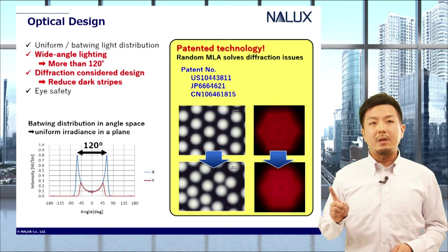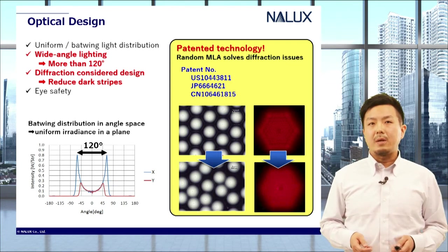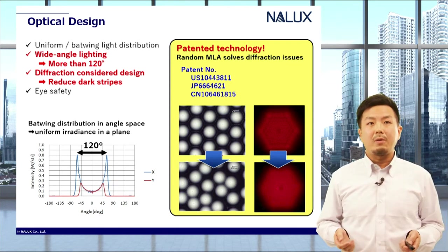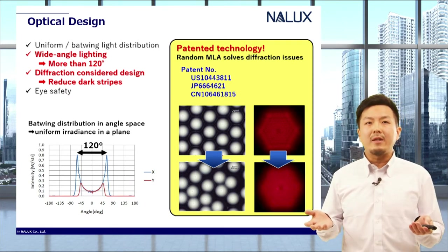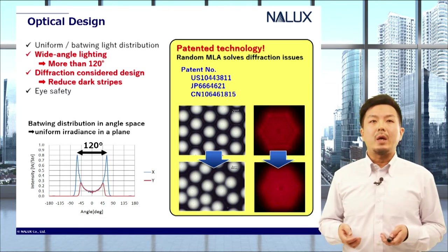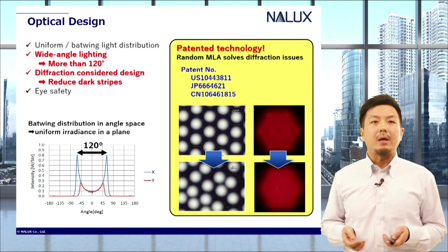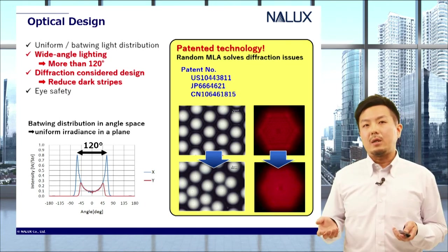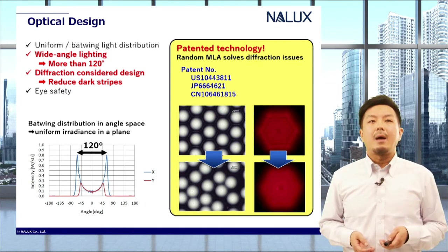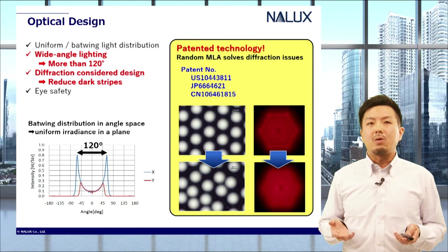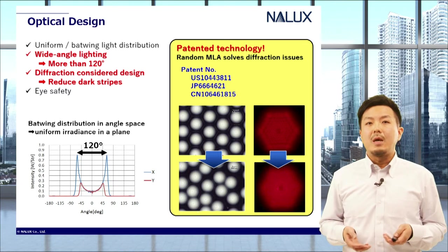First, about optical design. Optical design experts at NARX will fulfill your request. A uniform radiance distribution or a uniform irradiance distribution can be realized with MLA diffuser owing to its high degree of freedom of optical design. More than 120 degrees of illumination angle is possible by NARX design, and our patented technology of random MLA can solve issues of diffraction such as dark stripes, which often occur in laser systems.